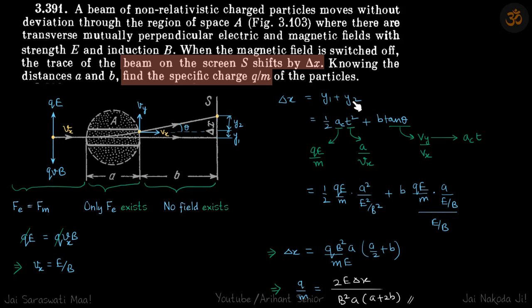Plus Y2. So Y2 is the height it gains after leaving the field. So that should be, if this is B, then Y2 should be B tan theta by geometry. And what is tan theta? So theta is the angle that Vy and Vx make. So tan theta will be Vy by Vx.